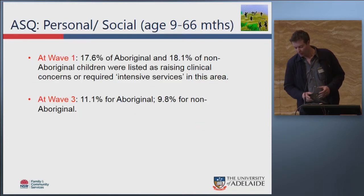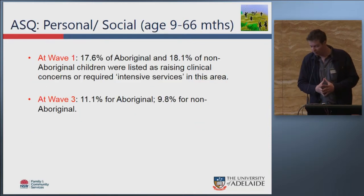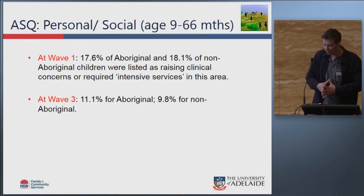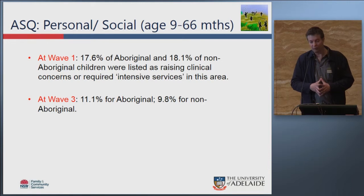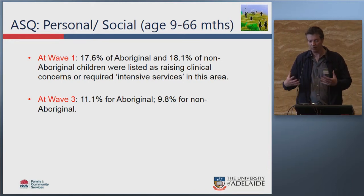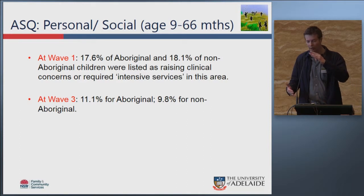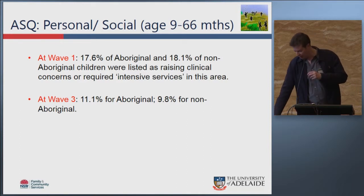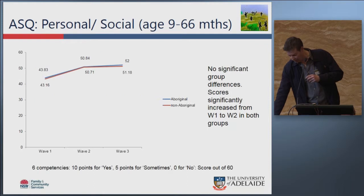The ASQ measures showed that trajectories for Aboriginal and non-Aboriginal children were broadly consistent across time, characterised by an increase and then stabilisation — for example on personal and social development.